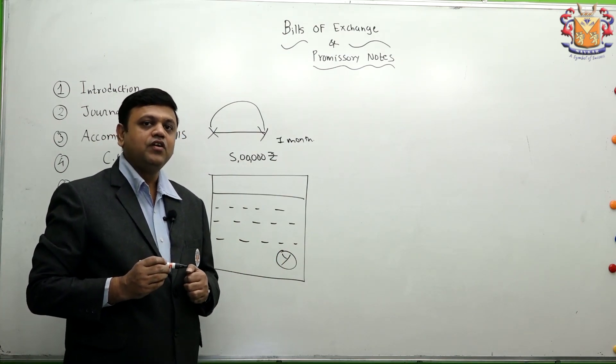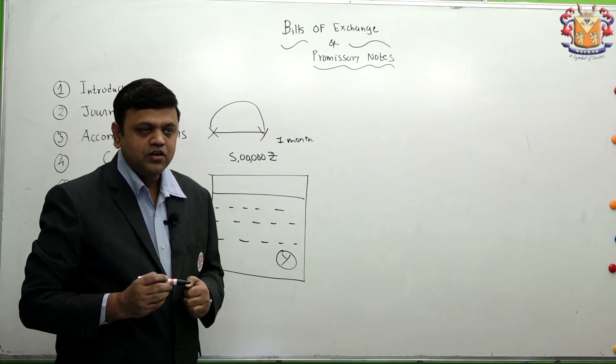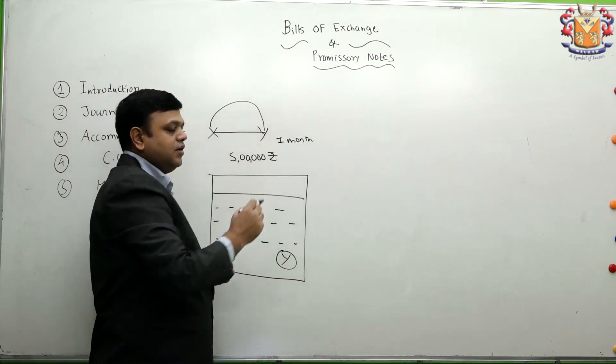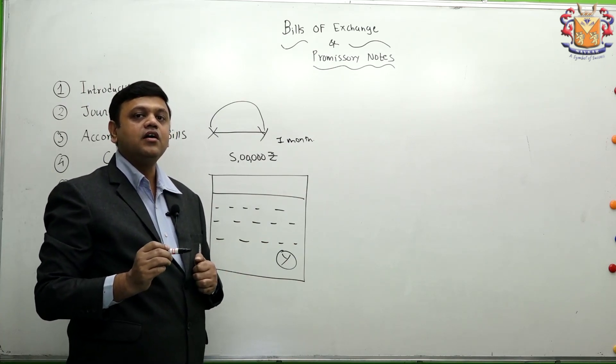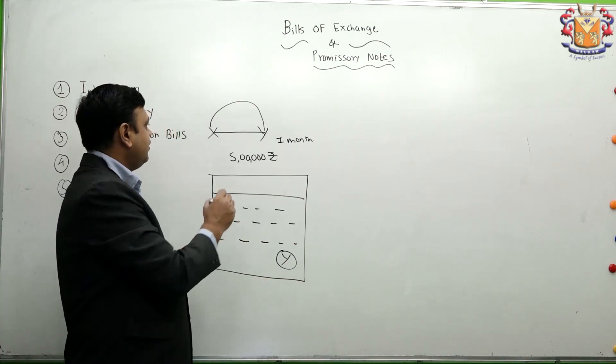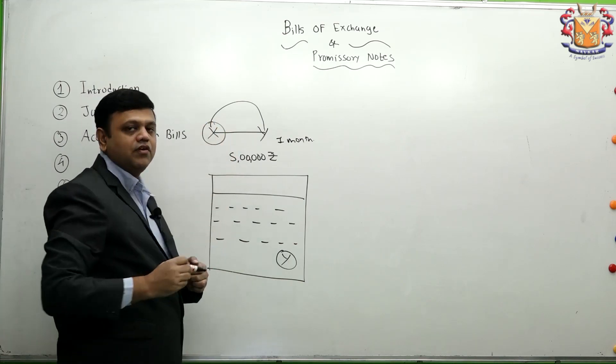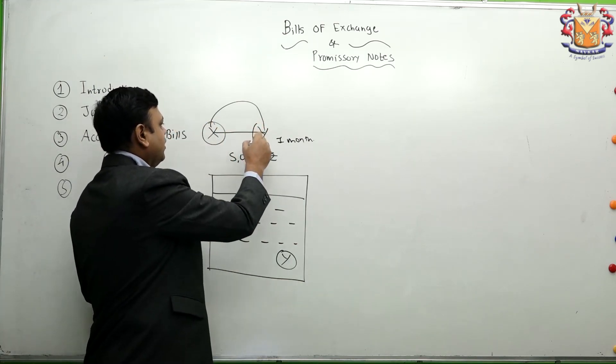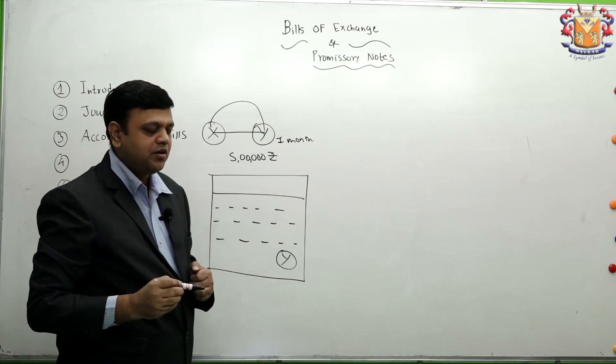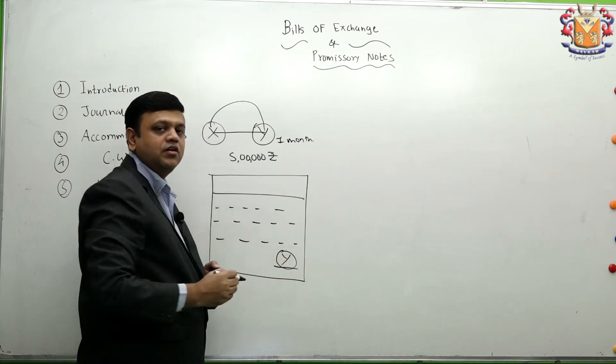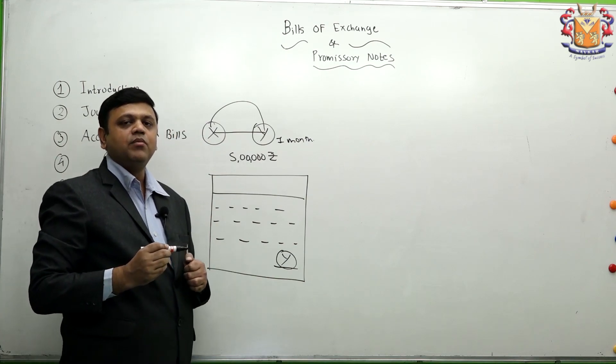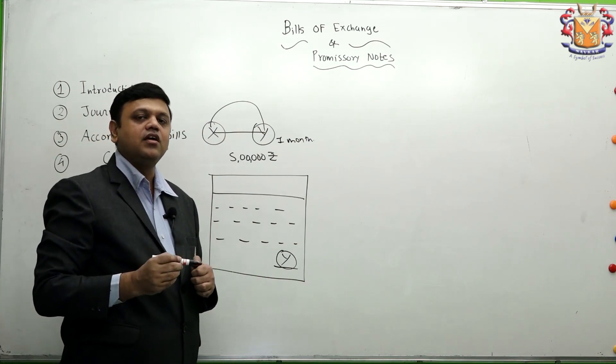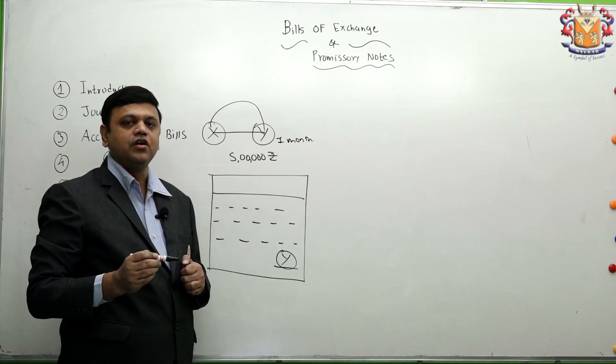So first of all we need to understand the definition of the bills of exchange. Bills of exchange is an instrument in writing containing an unconditional order. Be careful friends, this is an order given by X to Y, and that order is accepted by Y by signing on the bills of exchange. So if I continue the definition, bills of exchange is an instrument in writing containing an unconditional order to pay.